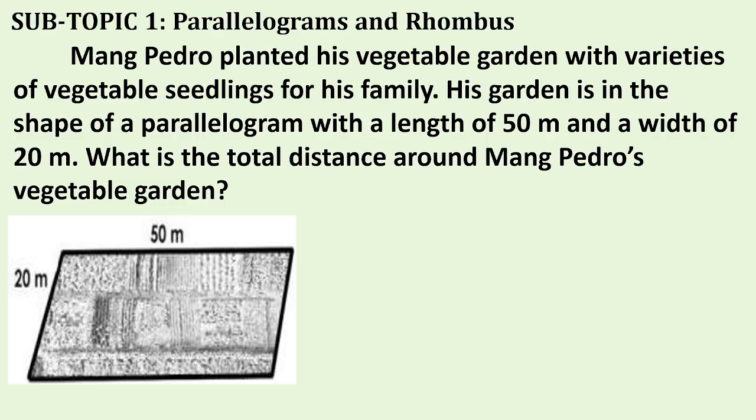Day 2. Subtopic 1: Parallelogram and Rhombus. Mang Pedro planted his vegetable garden with varieties of vegetable seedlings for his family. His garden is in the shape of a parallelogram with a length of 50 meters and a width of 20 meters. What is the total distance around Mang Pedro's vegetable garden?